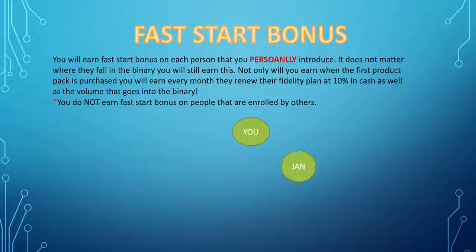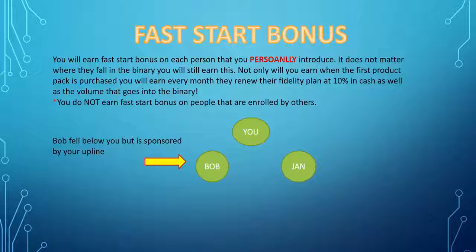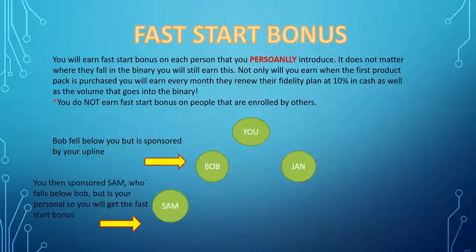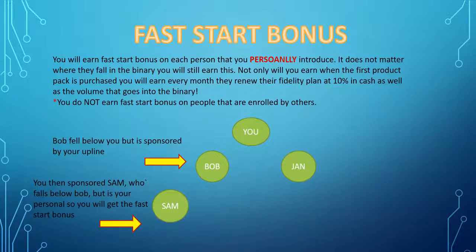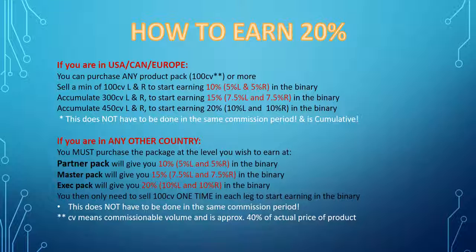You do not earn fast start bonuses on people that are enrolled by others. So here's you — you've already sponsored Jan. Bob fell below you but is sponsored by your upline, so you will not earn a fast start bonus on Bob. But then you sponsor Sam. Sam must fall below either Bob or Jan because you only have two legs, so Sam falls below Bob, but he is personally enrolled by you — you would then get the fast start bonus from Sam's purchases.